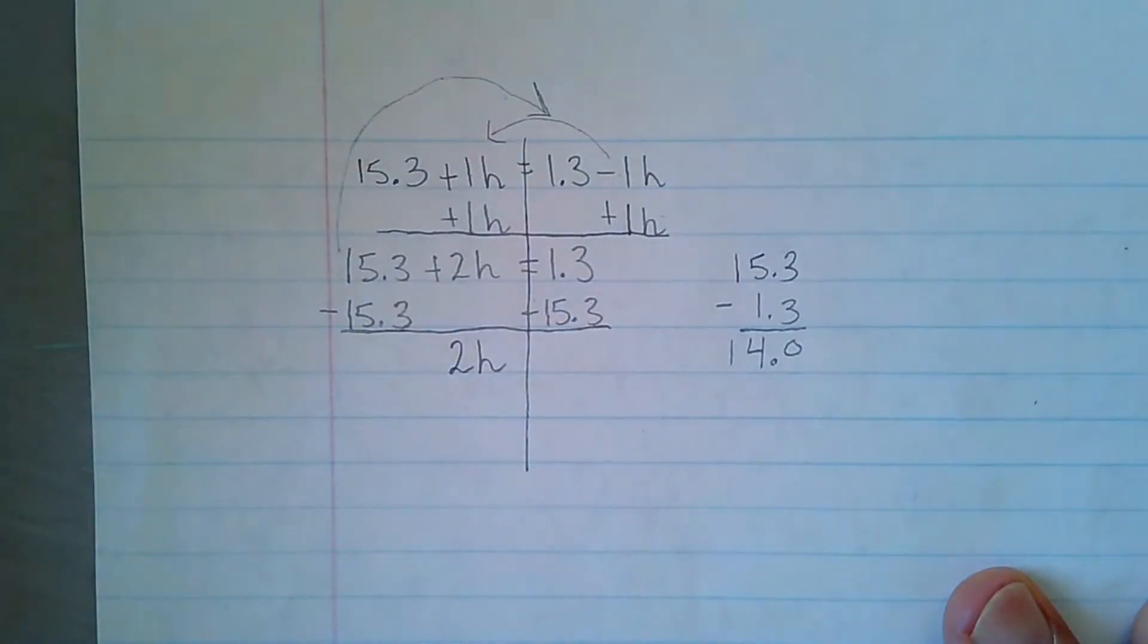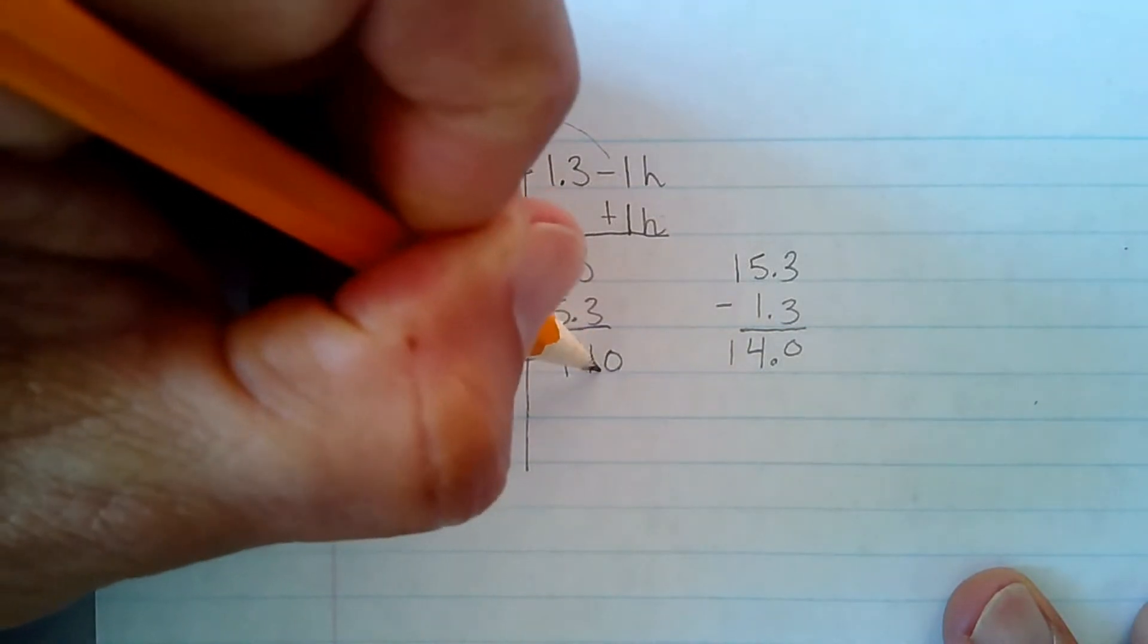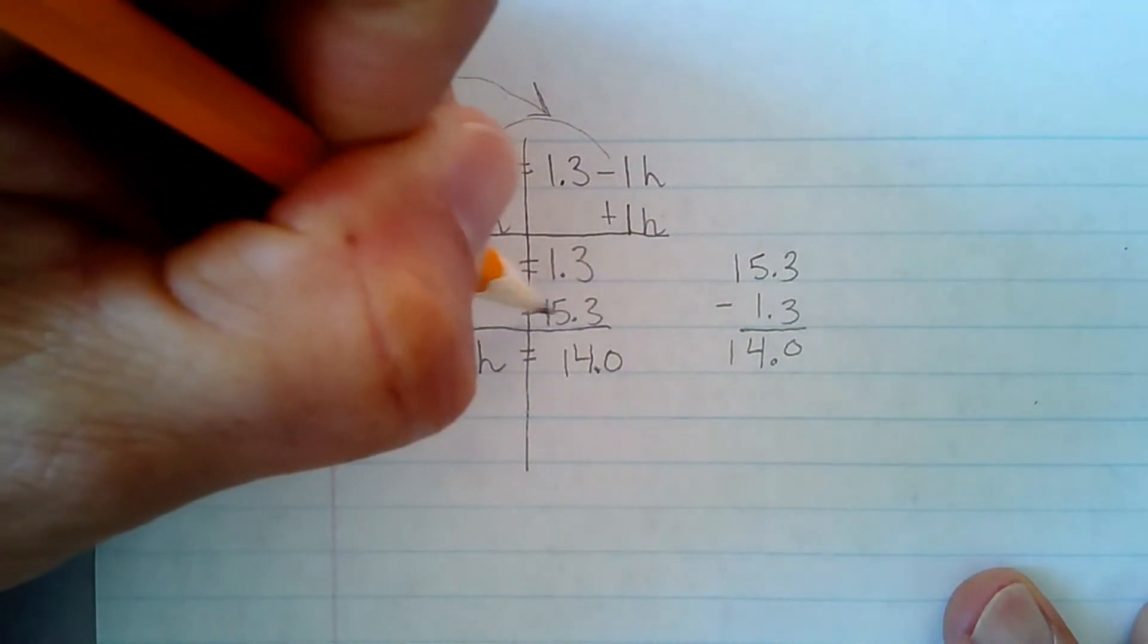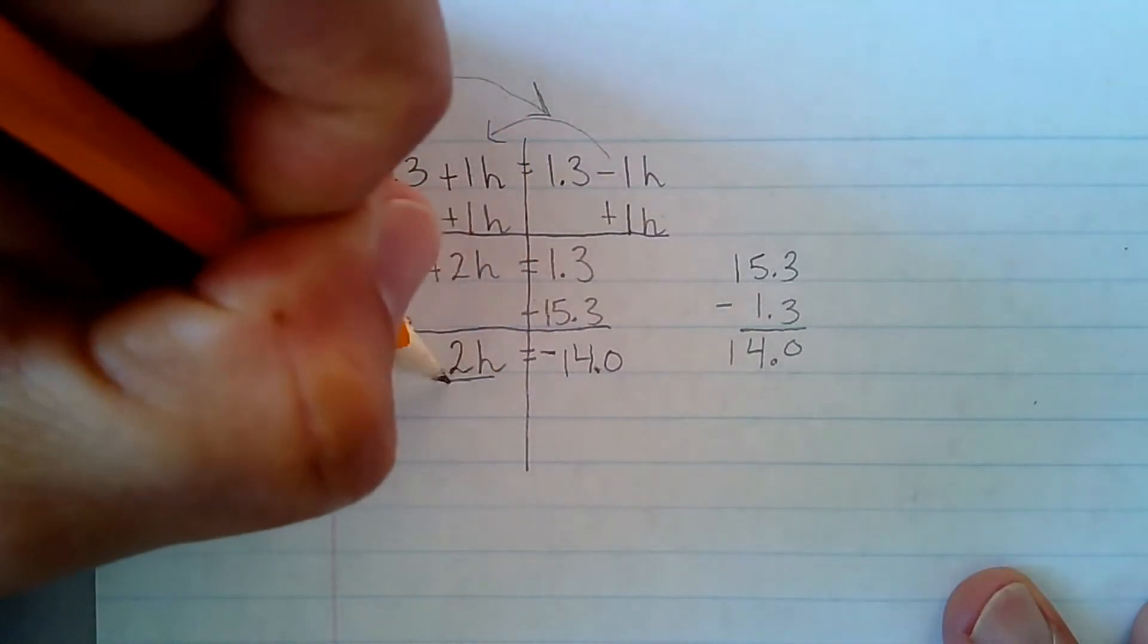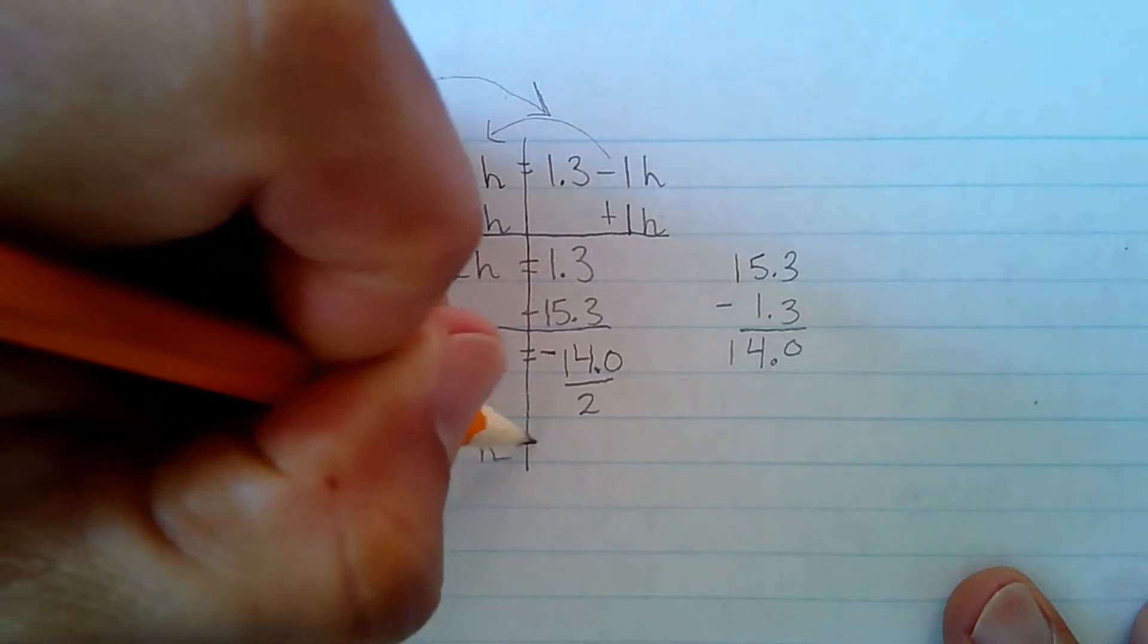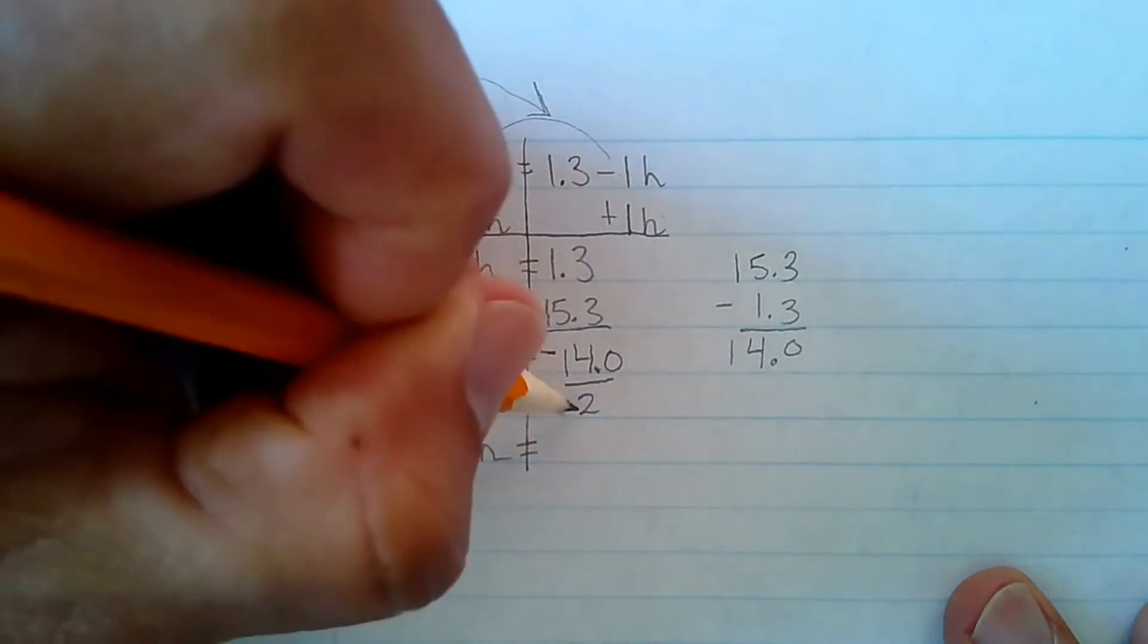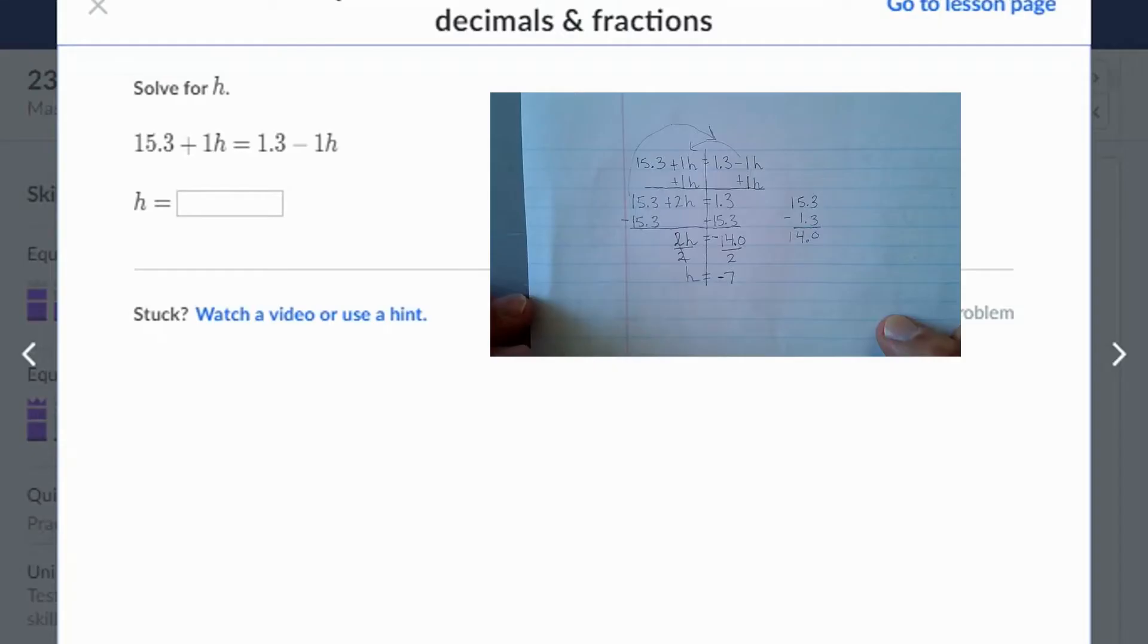And so this ends up being the 14.0, but I have to remember now the 15.3 is negative, so that's negative 14. Divide by 2. These cancel. And h is equal to 14 divided by 2 is 7, but this has to be a negative 7. And now I can go to the other side and put in a negative 7, and got it.